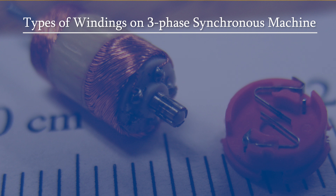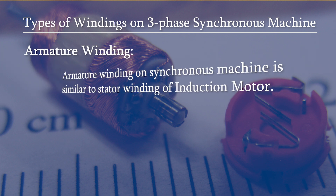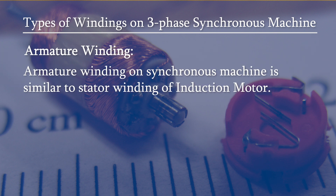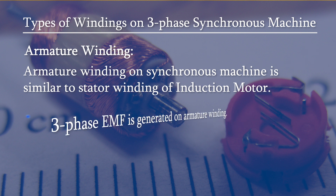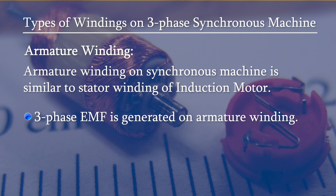Types of windings on three phase synchronous machines. First, we have the armature winding. Armature winding on a synchronous machine is similar to the stator winding of an induction motor. In this machine, the armature winding is on the stator, whereas in the induction motor the armature winding was on the rotor. Three phase EMF is generated on the armature winding.